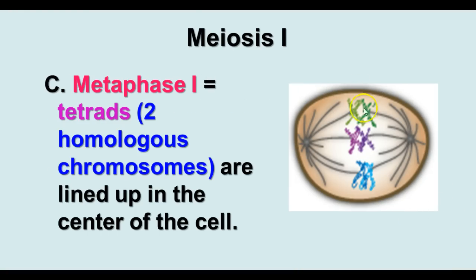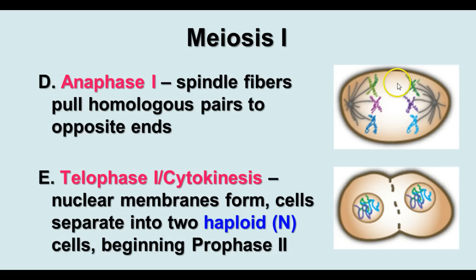In metaphase I, the tetrads line up in the center of the cell, attached to spindle fibers that form during prophase, so homologous chromosome pairs are lined up in the center. In anaphase I, the homologous chromosomes separate, but the chromatids are still attached to the centromere. At the end of telophase I and cytokinesis, a nuclear membrane forms and the cell separates into two haploid cells. However, each haploid nucleus is composed of duplicated chromosomes because the chromatids have not yet separated.